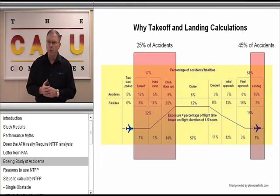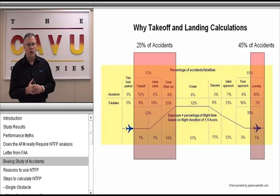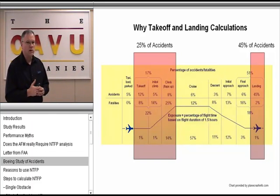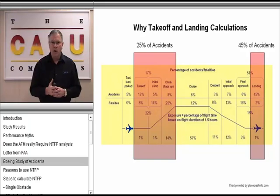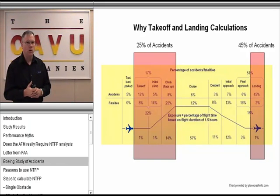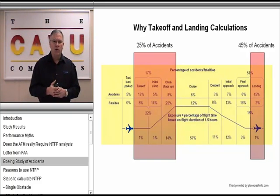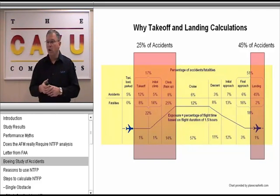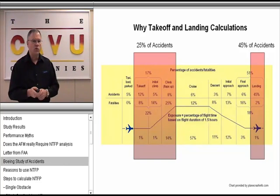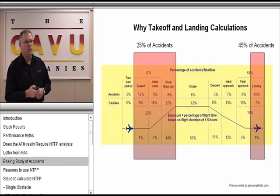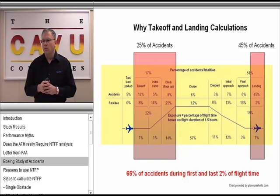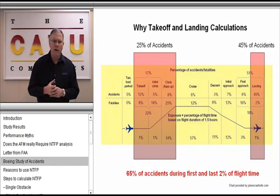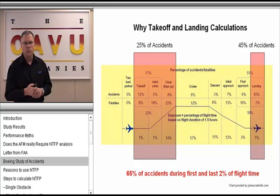Why do we talk about doing takeoff calculations and landing calculations? Boeing did a study — ending in 2006 — of Part 121 aircraft. The same numbers could certainly be applied to 135 and so on. Most accidents — 25% — occur during the takeoff phase up to the point of flap retraction, and 45% occur in the landing, which is of no surprise. What's interesting are the percentages at the bottom of the chart that reflect accidents as a basis of flight time. 65% of all accidents occur during the first and last 2% of flight time.